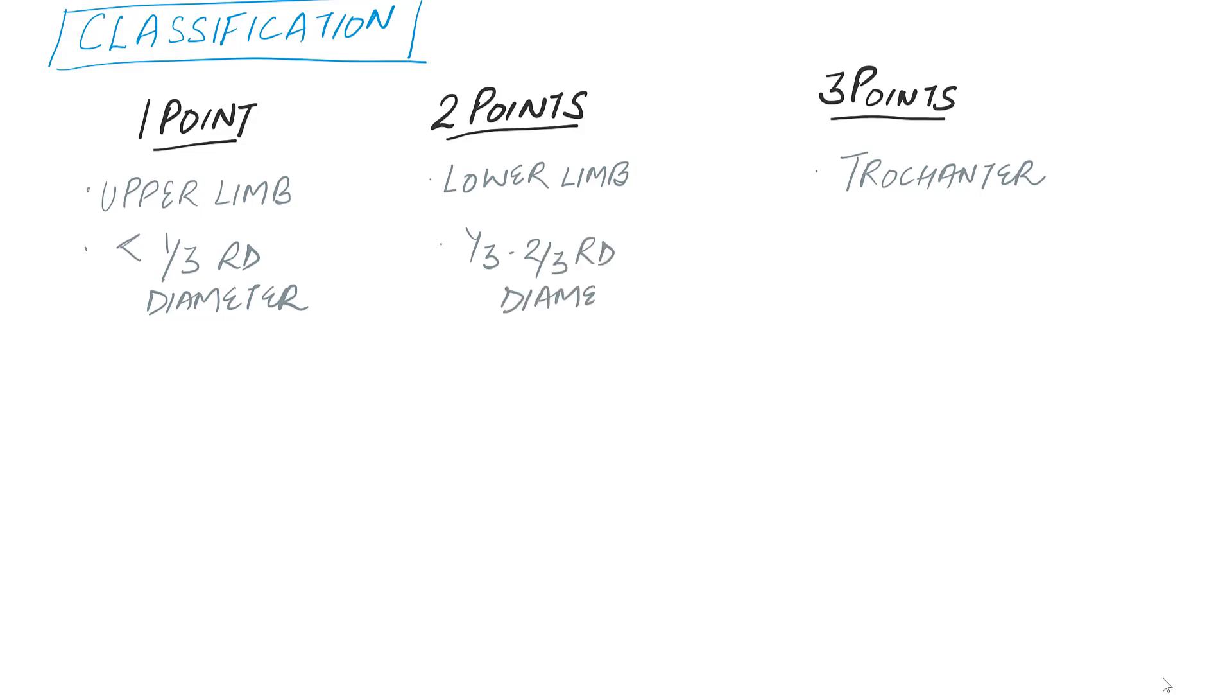The lesions in these sites are then looked at as how much of the diameter the lesion is extending up to. It can be one-third of the diameter, one-third to two-thirds of the diameter, or more than two-thirds of the diameter.